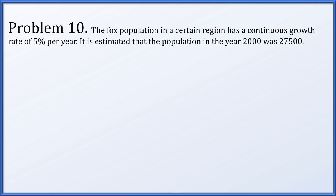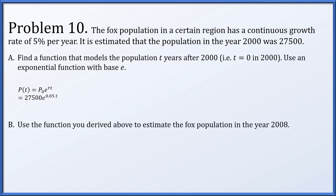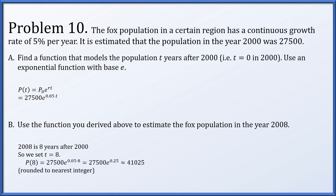Problem 10. The fox population in a certain region has a continuous growth rate of 5% per year. It is estimated the population in the year 2000 was 27,500. Find a function to model the population t years after 2000, using an exponential function with base e. The population t years after 2000 is p0 times e to the rt, where p0 equals 27,500 and r equals 0.05. Using this function, the fox population in 2008 — which is t equals 8 — works out to about 41,025, rounded to the nearest integer since we're counting foxes.